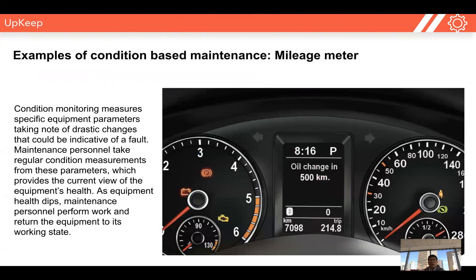An example I'd love to go over is condition-based maintenance for a mileage meter. We're all familiar with this — we've got oil on our car that we need to replace every 6,000 to 7,000 miles. Condition-based monitoring is about using specific equipment parameters and taking note of when we need to perform maintenance. So for this, we need to perform an oil change every 7,000 miles we drive our car — every 7,000 miles that condition is met, and we go out and replace the oil.